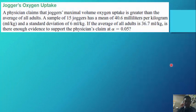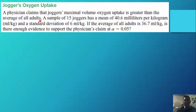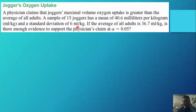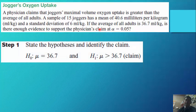Example — joggers' oxygen uptake. A physician claims that joggers' maximal volume oxygen uptake is greater than the average of all adults. A sample of 15 joggers has a mean of 40.6 milliliters per kilogram and a standard deviation of 6 ml/kg. If the average of all adults is 36.7, is there enough evidence to support the physician's claim at an alpha of 0.05?